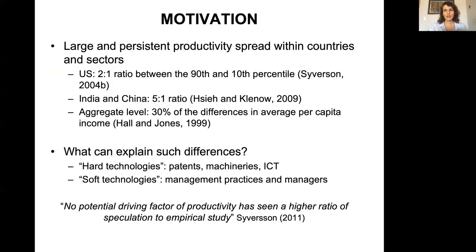The motivation of this talk is that we observe large and persistent productivity spread even within countries and even within narrowly defined sectors. It has been shown that the ratio between firms in the 9th and 10th percentile in terms of productivity in the US is 2 to 1, and this spread appears even larger in countries like India and China, where it is 5 to 1. At the aggregate level, 30 percent of the average differences in per capita income can be ascribed to productivity.